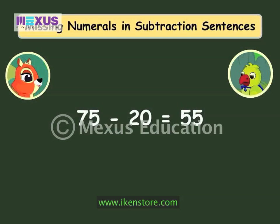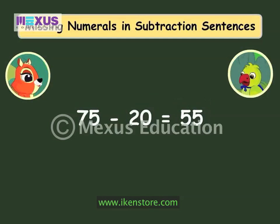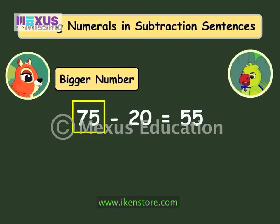Will this method help us in finding missing numbers in subtraction statements? Yes! First, take a look at a subtraction sentence: 75 minus 20 is equal to 55. In subtraction, the smaller number is subtracted from the bigger number. Here, 20, the smaller number, is subtracted from 75, the bigger number.